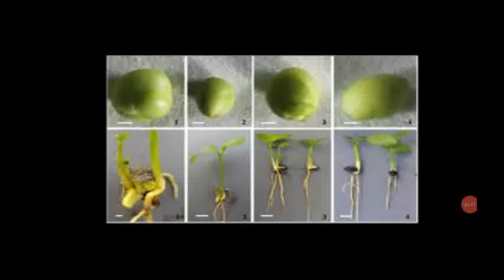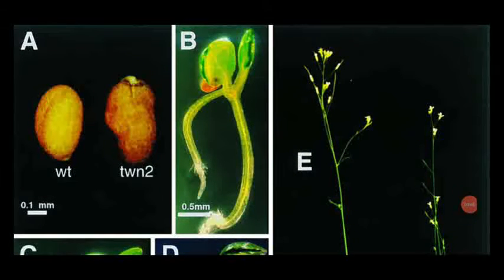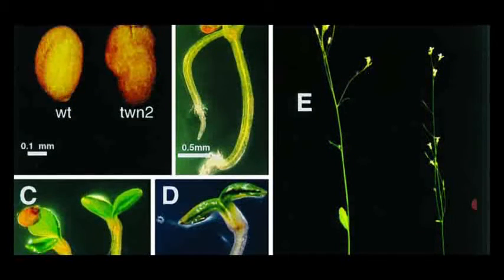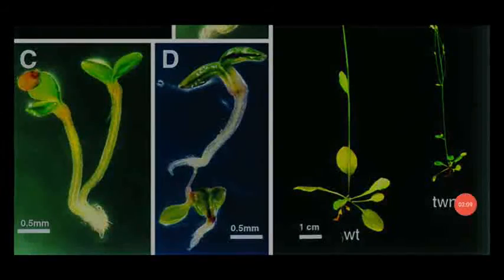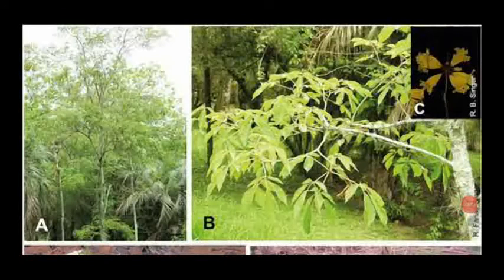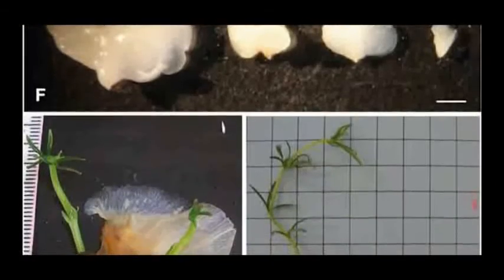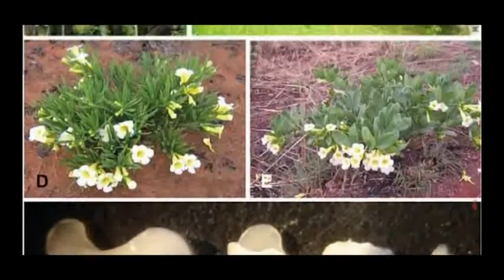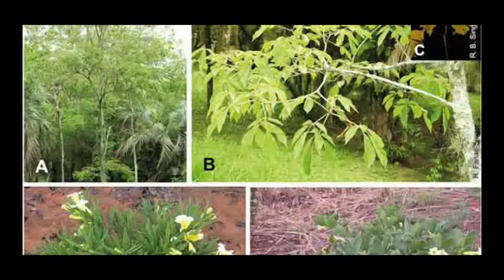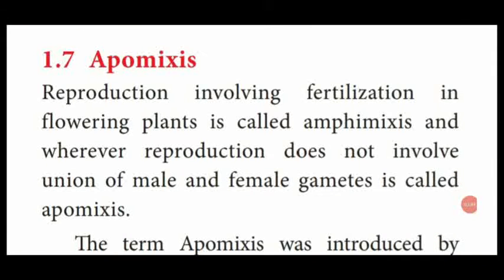This diagram shows the polyembryony stage of a plant, and this is another diagram showing the different stages of polyembryony developmental stages. Another diagram shows the apomixis type of plants. Those are all the different diagrams showing apomixis method, polyembryony development, and the last topic is parthenocarpy fruits. We are going to see what is apomixis, classification of apomixis, and the different methods of apomixis.